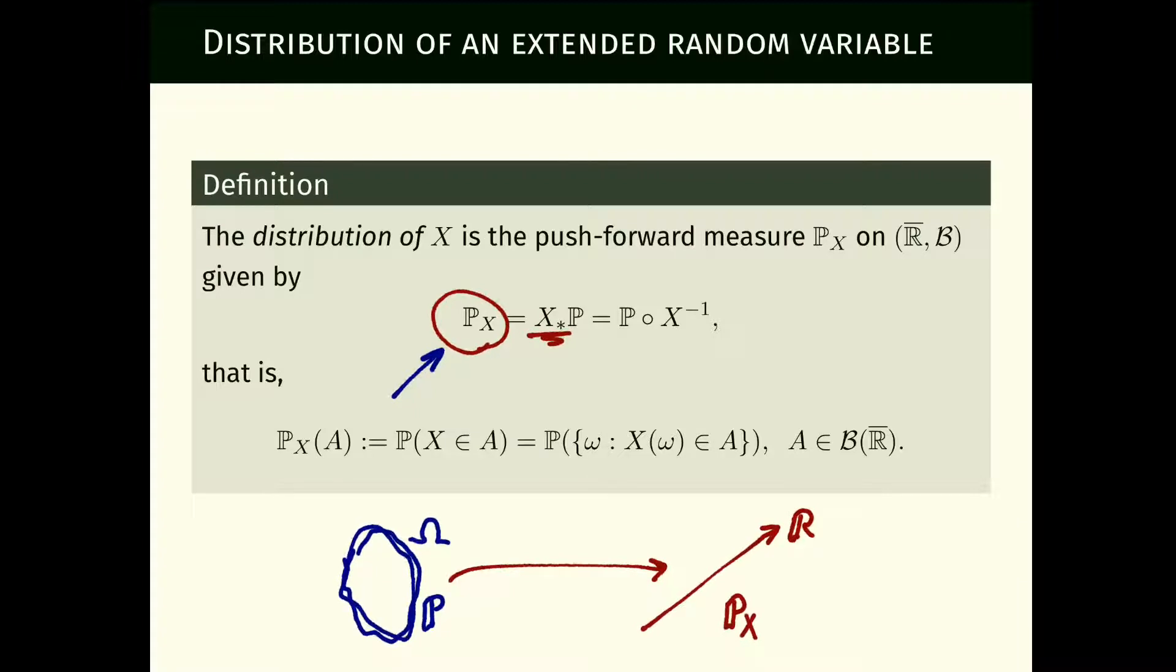There's some layer of abstraction where we start with some complicated space omega and probability measure P, then map it to the real line and get the image of this measure P by the function x. Anything that depends only on the random variable x can be done on this space alone. It doesn't matter where it came from.